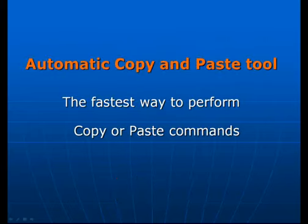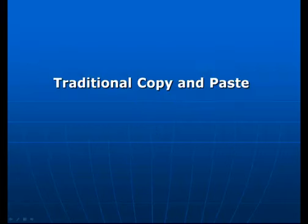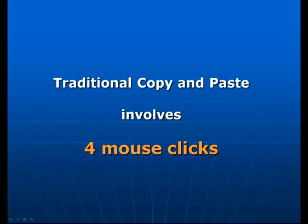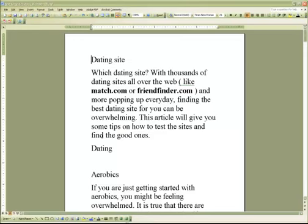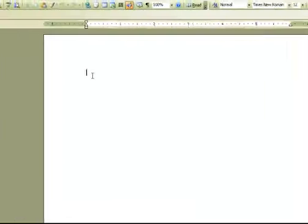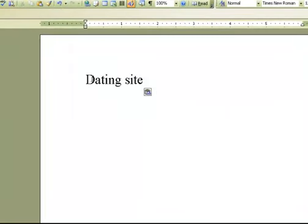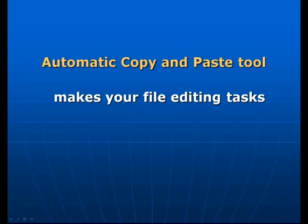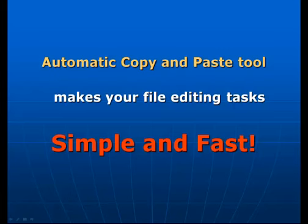The automatic copy and paste tool allows you to perform copy or paste operations much faster and practically with no effort. The traditional copy and paste commands involve four mouse clicks, but with the automatic copy and paste tool you don't have to click that many times. To perform an automatic copy command, all you do is highlight the text you want to copy, and the selected text gets automatically copied to the clipboard. To make an automatic paste command, you simply click to point where you want to paste in a file, and the paste is done automatically. Even the undo command can be done much easier with just a single click on the middle button.